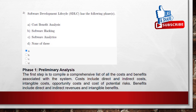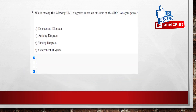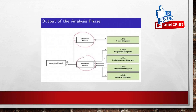The third question: which among the following UML diagrams is not an outcome of the SDLC analysis phase? Options are: A) deployment diagram, B) activity diagram, C) timing diagram, D) component diagram. According to the material, the output of the analysis phase includes class diagram, sequence diagram, collaboration diagram, statechart diagram, and activity diagram. A timing diagram is essentially a sequence diagram. Therefore, the answers are component diagram and deployment diagram, as these are not outputs of the analysis phase.